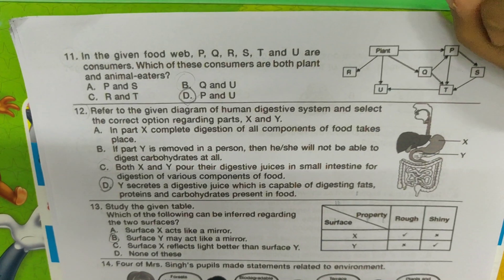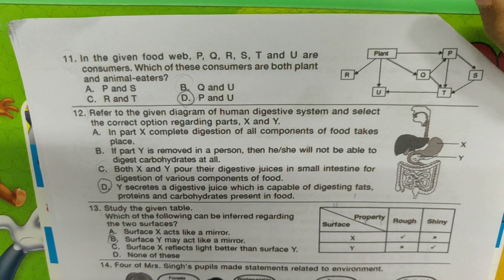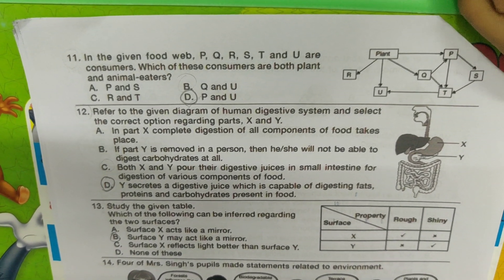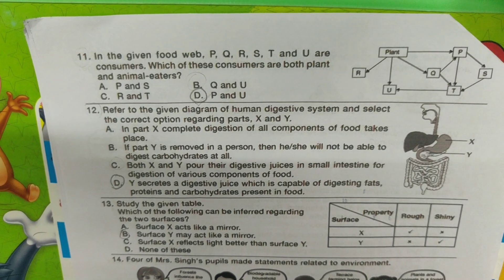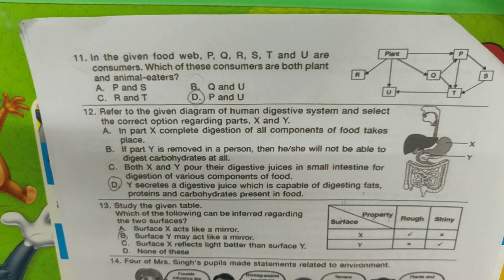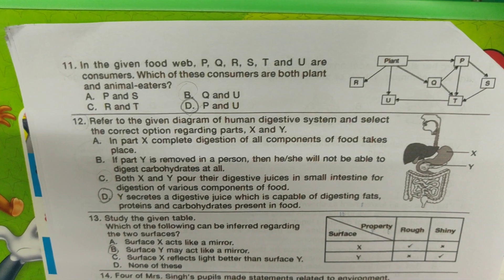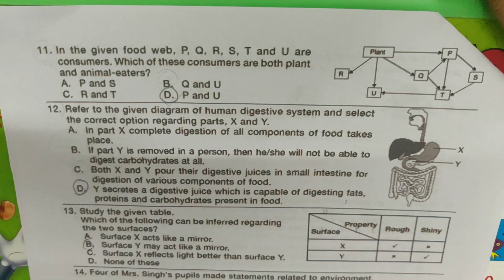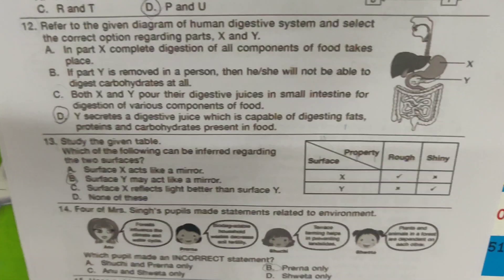Given food web with P, Q, R, S, T, and you are consumers. Which of these consumers are both plant and animal eaters? The answer is D — P, R, U.